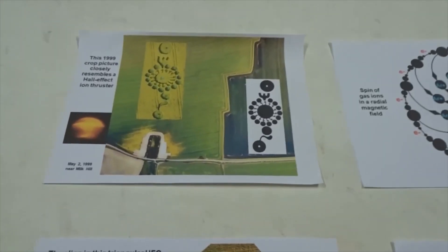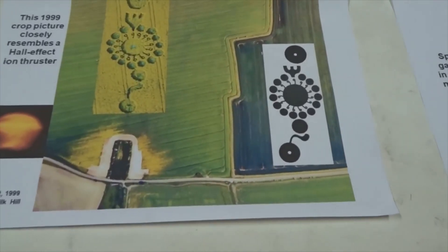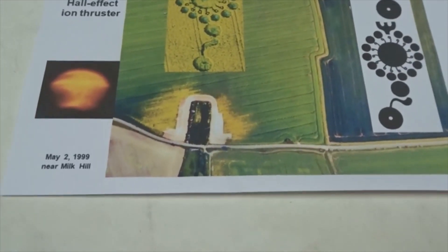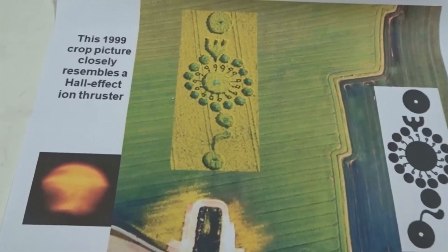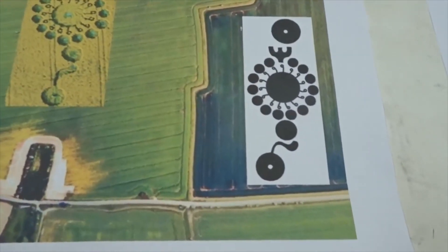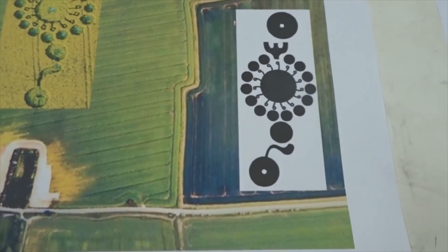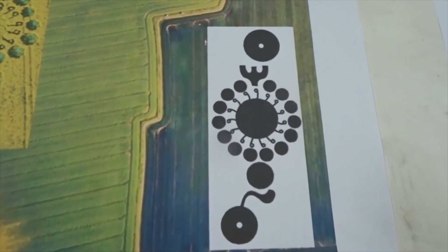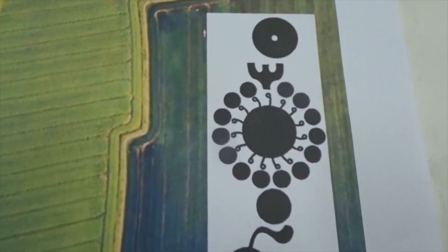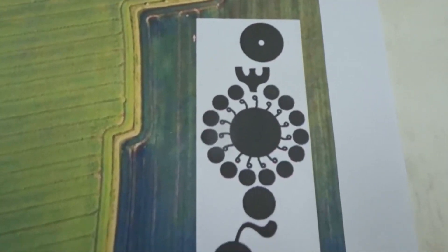Here's one near Milk Hill in 1999. We have a little picture of a UFO sitting on the ground, and a crop circle tells how it will rise up. We see argon ions or some sort of gas ions coming in the bottom, going through a spinning ring, and then getting shot out the top.